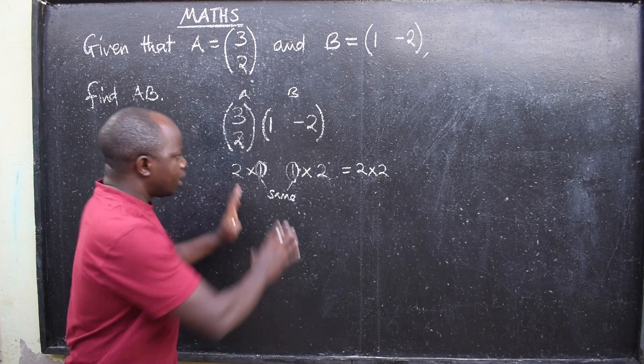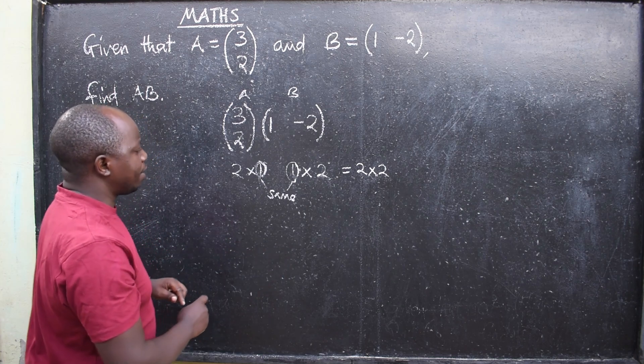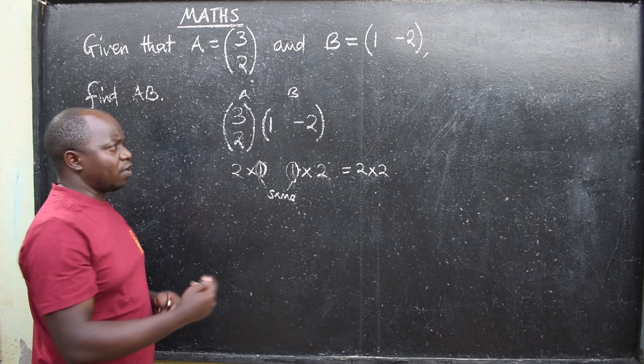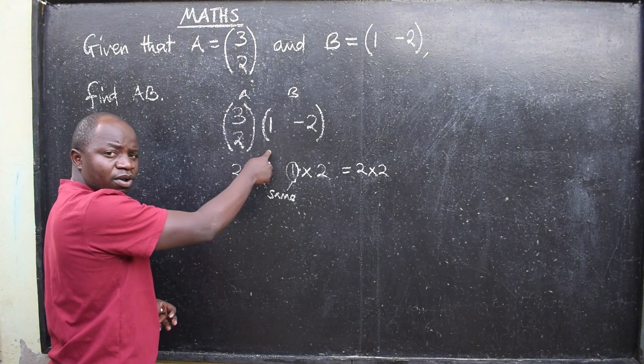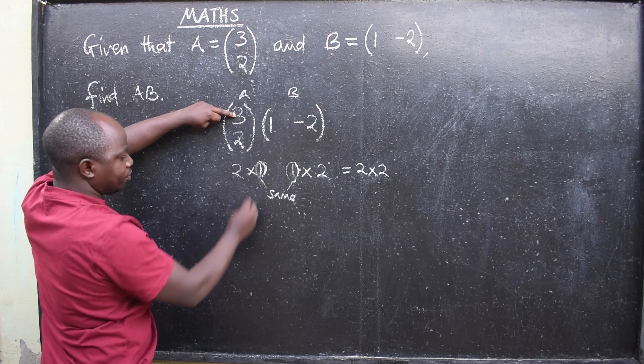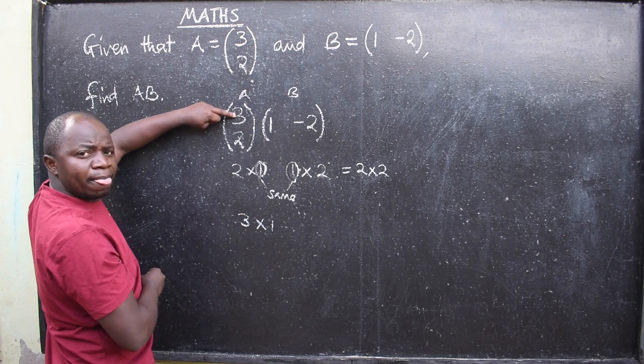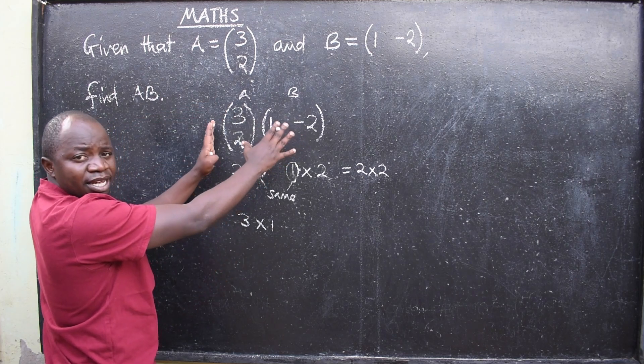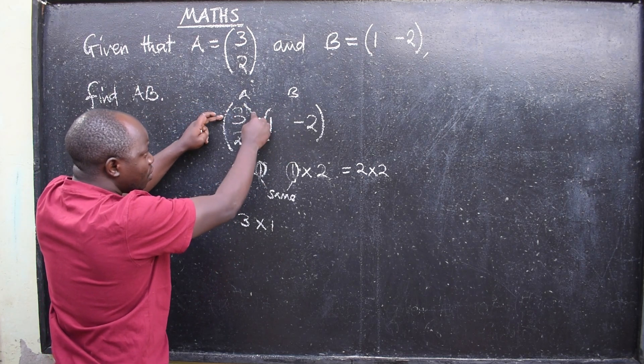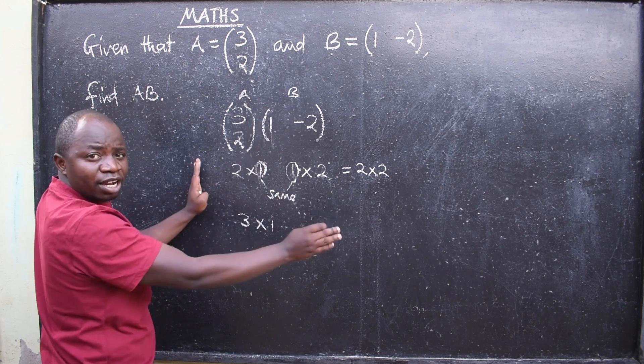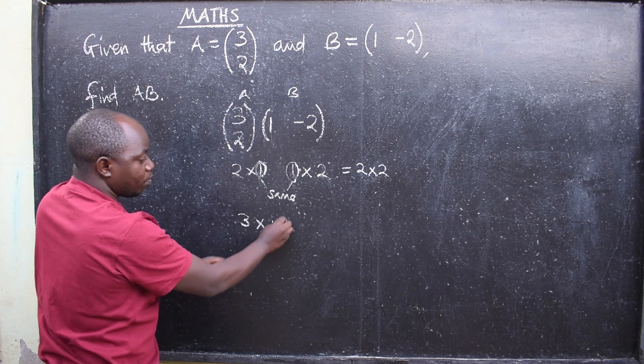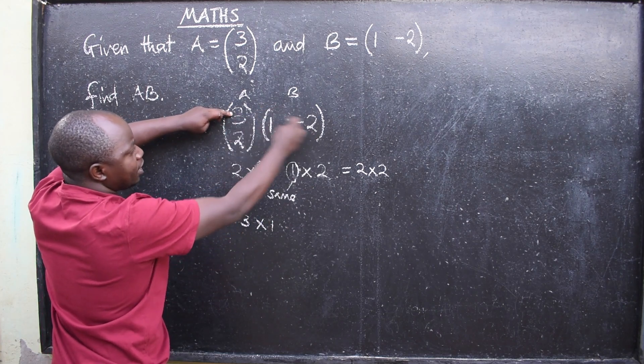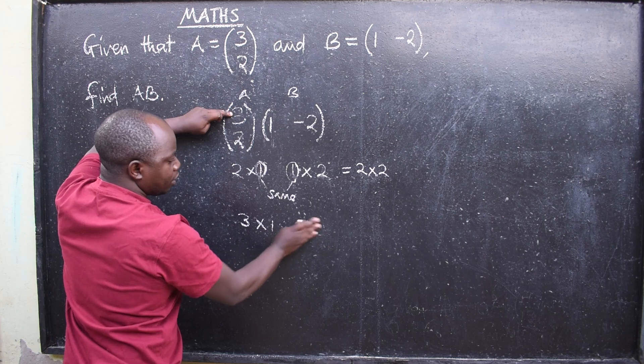Let's multiply. When you are multiplying, it is always row by column. So the first row multiplied by the first column would be 3 times 1. There is no addition here on this question because this row and this column have come to an end. Then you move on to the next part: 3 times negative 2.